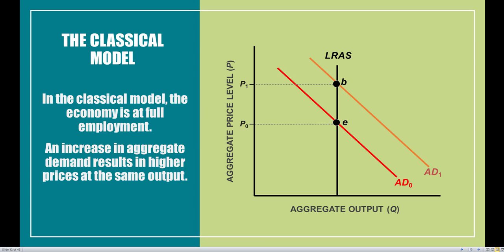Classical economists don't like any government intervention at all. We can apply this to fiscal policy as well — expansionary fiscal policy also shifts aggregate demand to the right, again leaving us with only higher prices in the long run. If you believe in the classical train of thought, you believe we should have no government intervention through monetary or fiscal policy, because the economy is always self-correcting and we always converge to long-run equilibrium instantaneously. There are no short-run impacts at all.